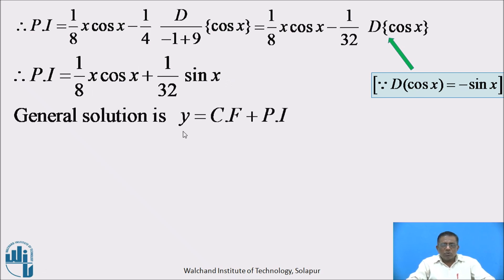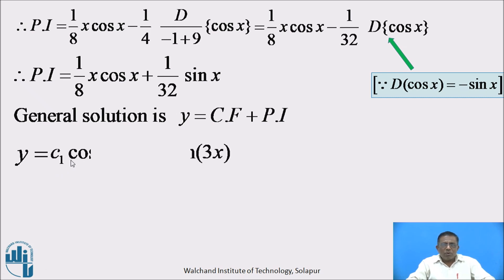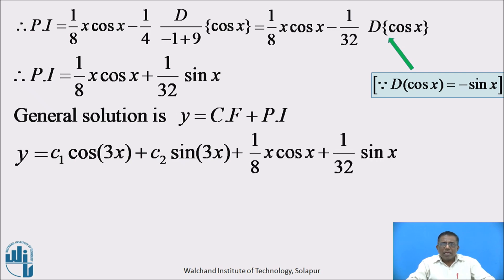Now the general solution is y = CF + PI. Substituting: y = c₁cos(3x) + c₂sin(3x) + (1/8)x·cos(x) + (1/32)sin(x). This is the required answer to the given differential equation.